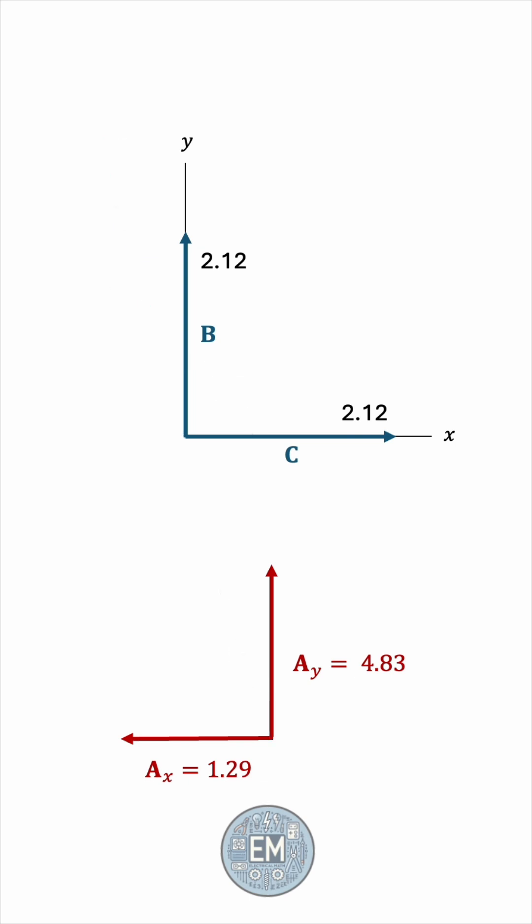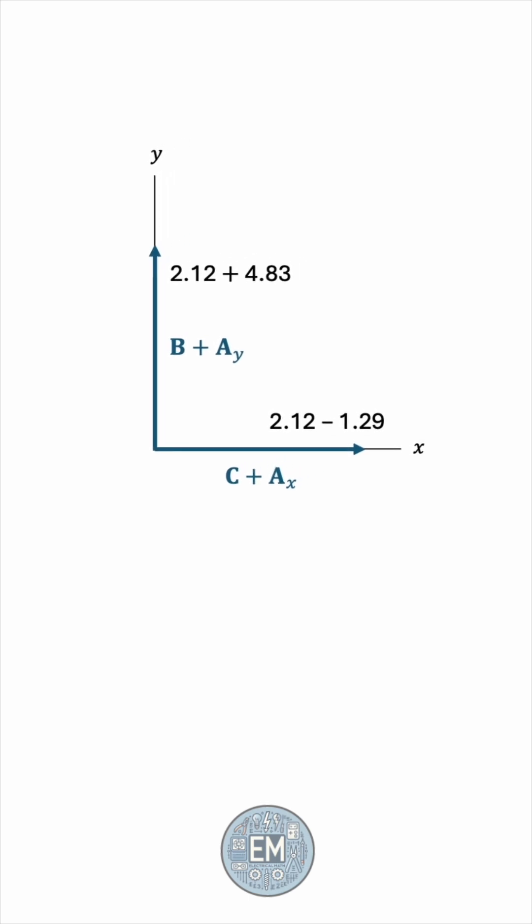And now, we can add the respective components. The vertical component will be 2.12 from b plus 4.83 from the y component of a, and the horizontal component will be 2.12 from c minus 1.29 from ax. Doing the addition, we get 6.95 for the vertical component and 0.83 for the horizontal component.